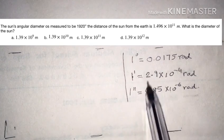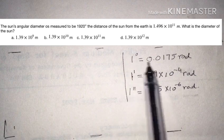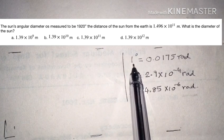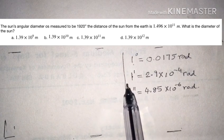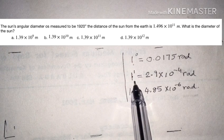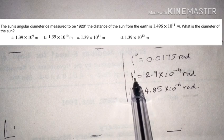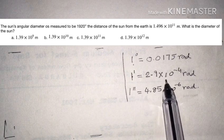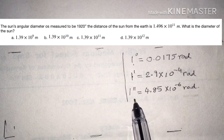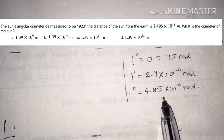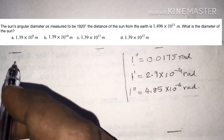To solve this, we use the conversion values: 1 degree equals 0.0175 radians, 1 minute equals 2.9 into 10 power minus 4 radians, and 1 second equals 4.85 into 10 power minus 6 radians.